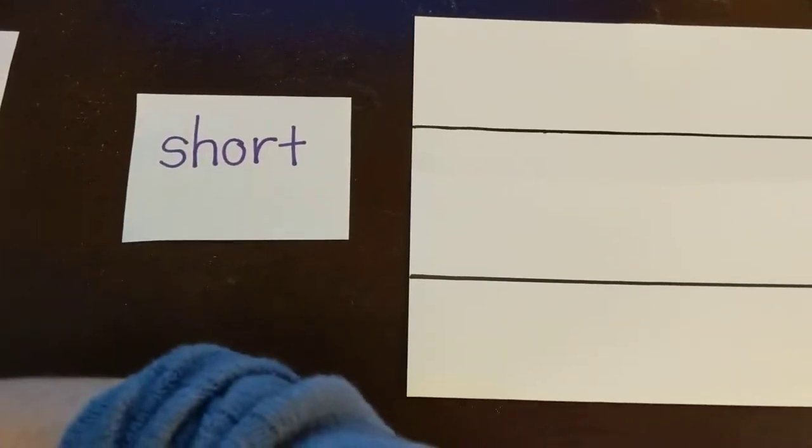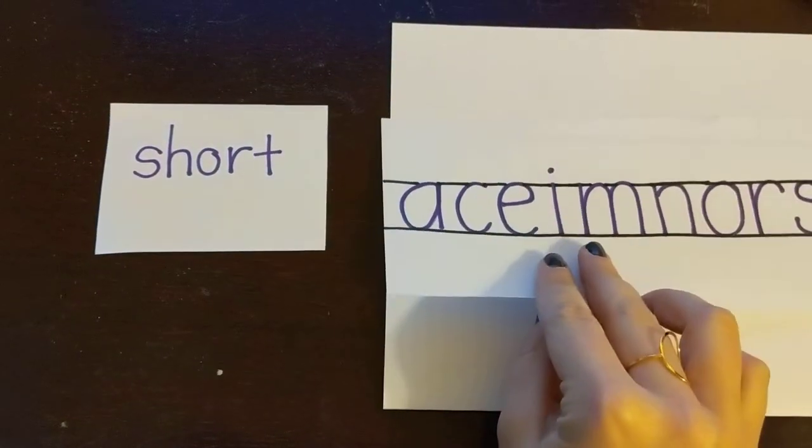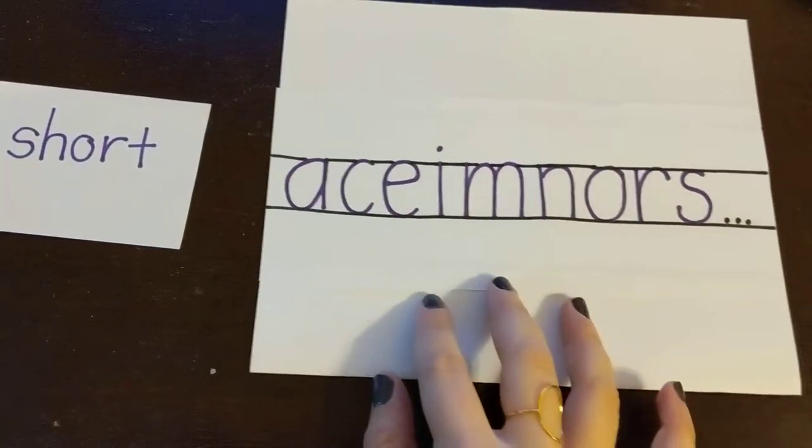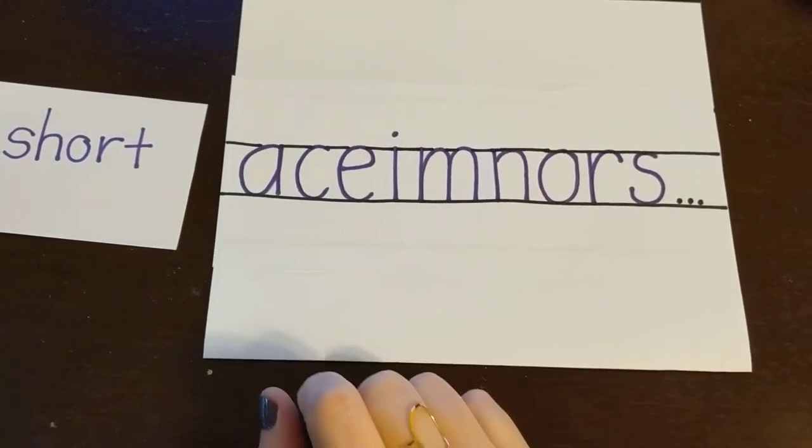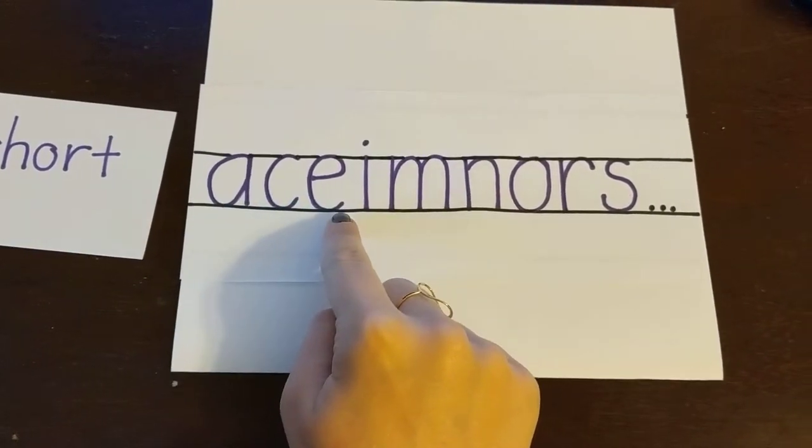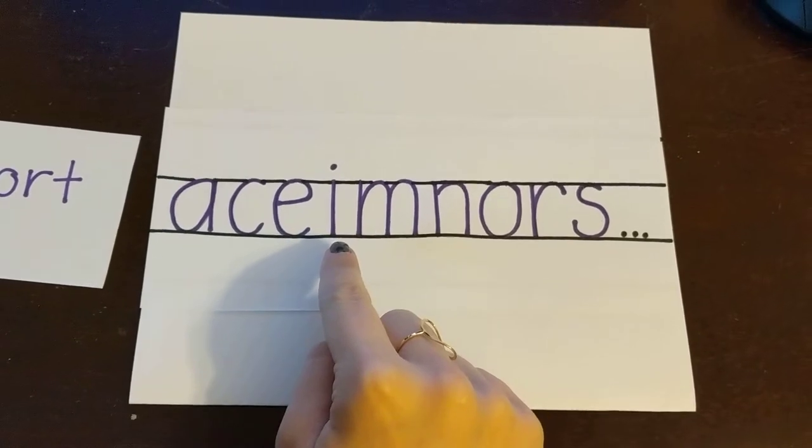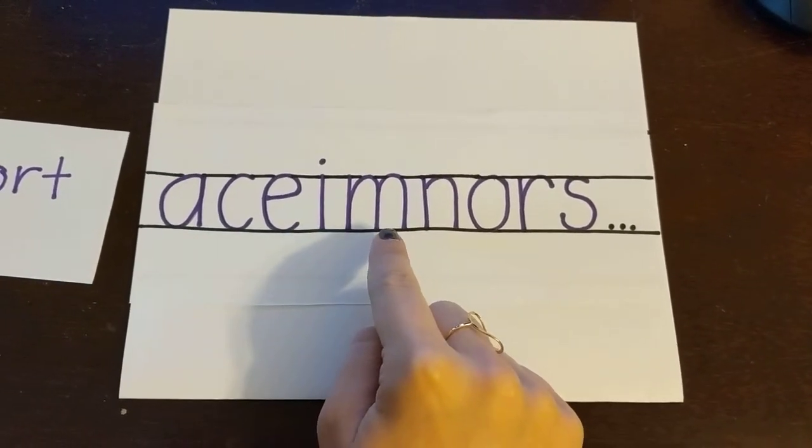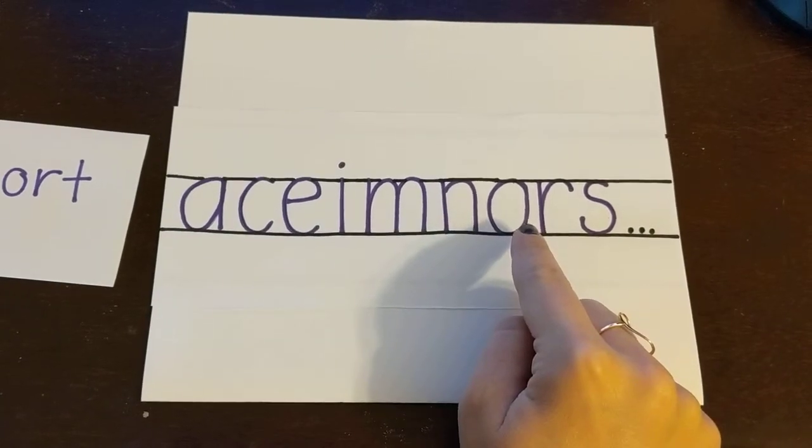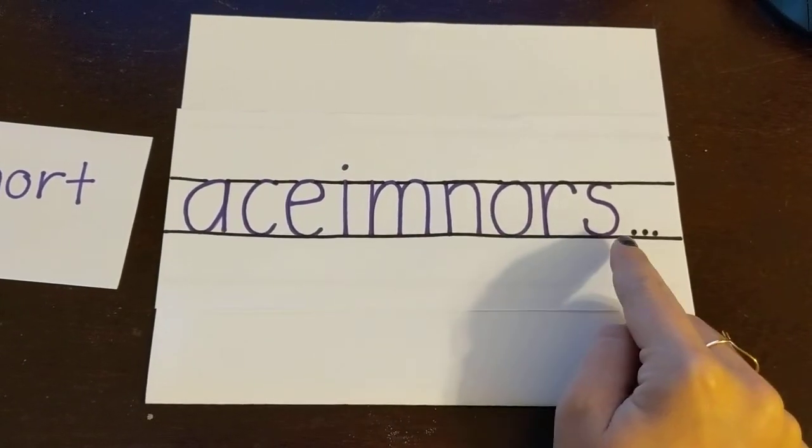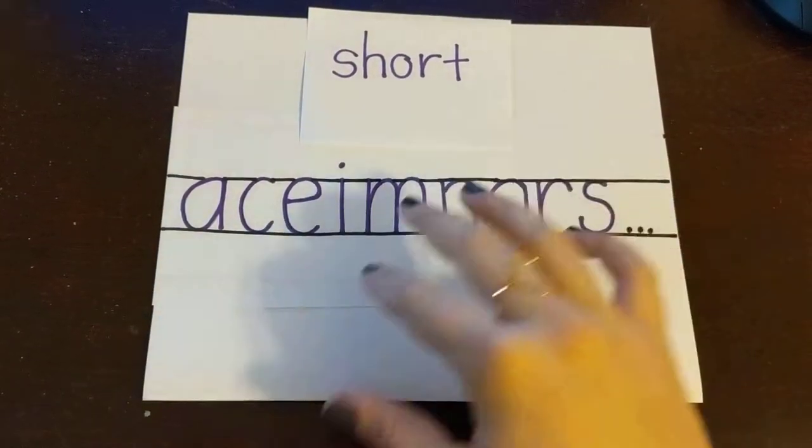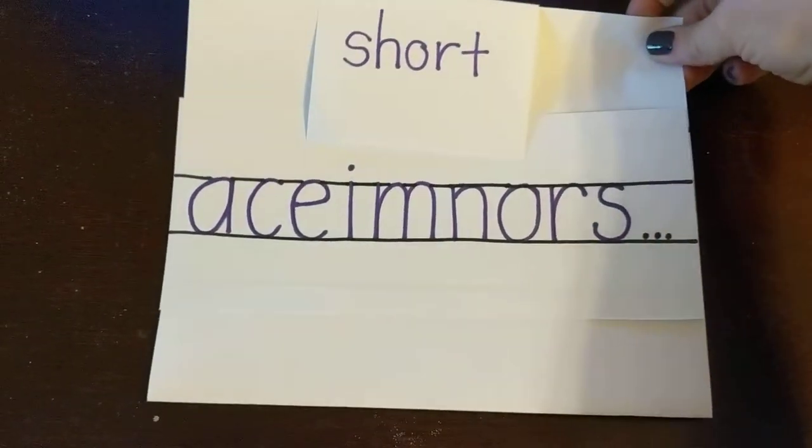Examples of short letters that come in between the lines are letters like A, C, E, I, M, N, O, R, and S. Can you think of more short letters that fall in between the lines?